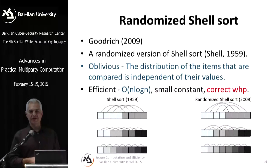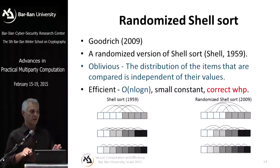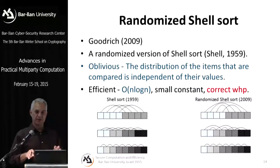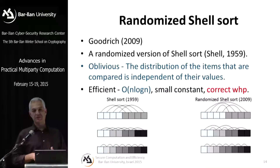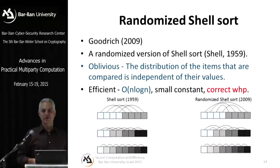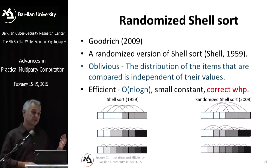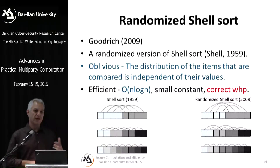Something different about all the results in this area is that whenever people use hashing, sorting, or data structures and say things work 'with high probability,' they don't mean with overwhelming probability — the probability of things going wrong is not negligible. Sometimes it's 1/n, sometimes 1/n², and sometimes it's very hard to read the paper and understand exactly what the error probability is. Many results in this area have error probabilities much higher than we're used to in cryptography. An interesting research question is to go over these algorithms, determine the exact error probability, and see if it can be improved to be negligible.